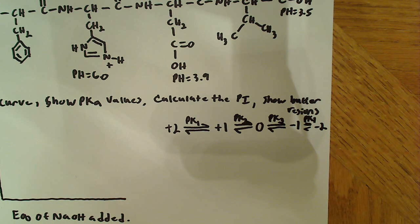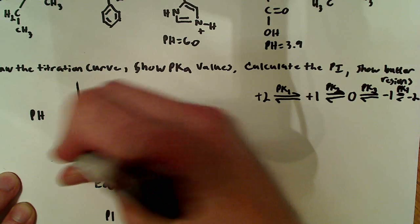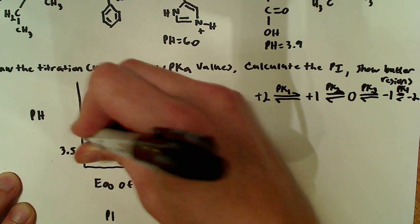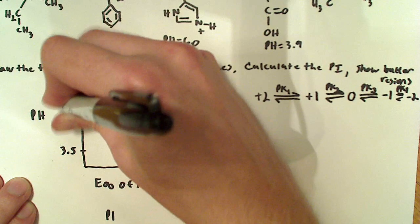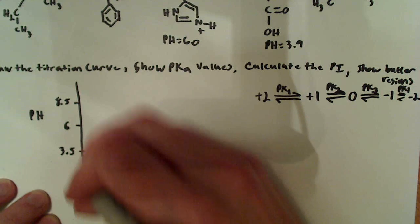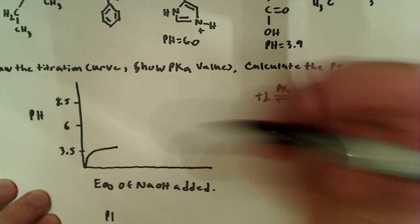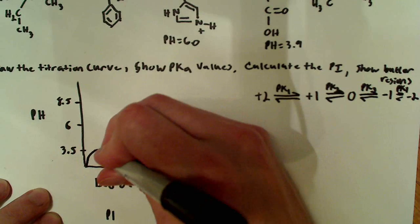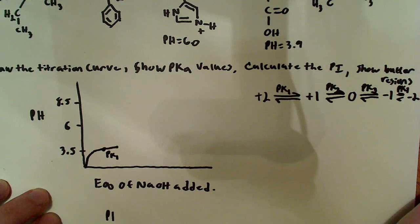So now what you want to do is you essentially want to label the graph and draw the curve. So over here I'm going to say 3.5, and then I'm going to say 6, and then I'm going to say 8.5 up here as my pH values. And so essentially the first thing you want to do is go to that first value and then flatten the curve out right there, just like that. And you want to mark this 3.5 here as our first pK1. So pK1 is right there.